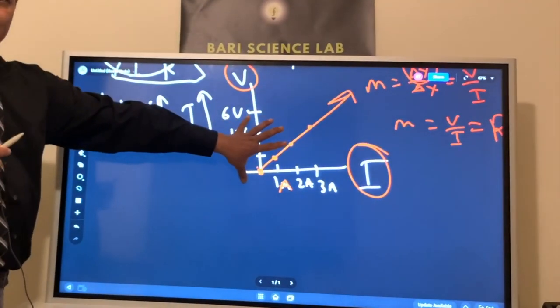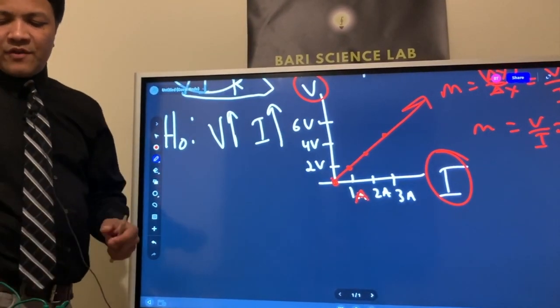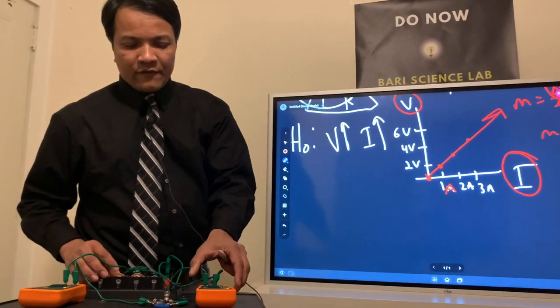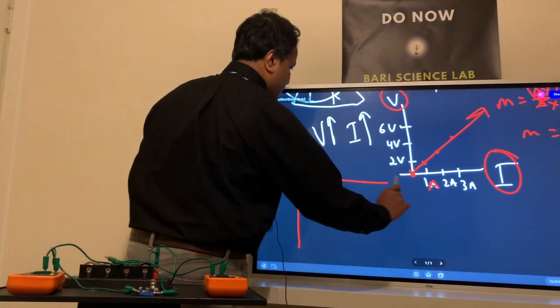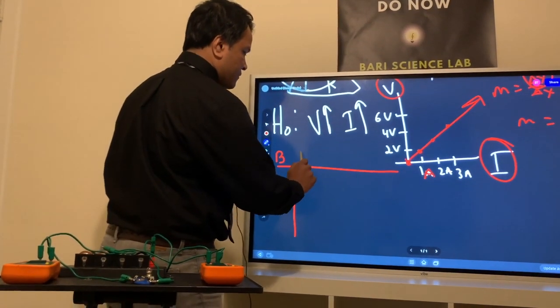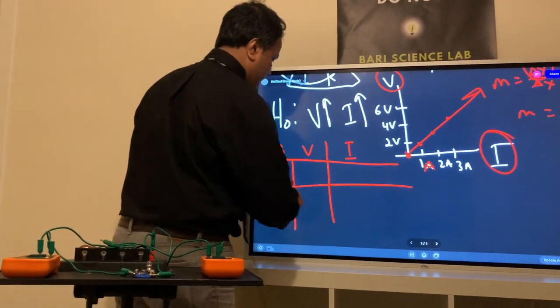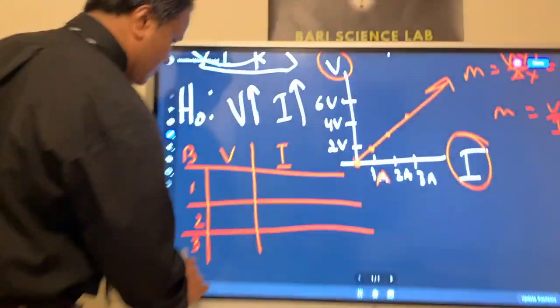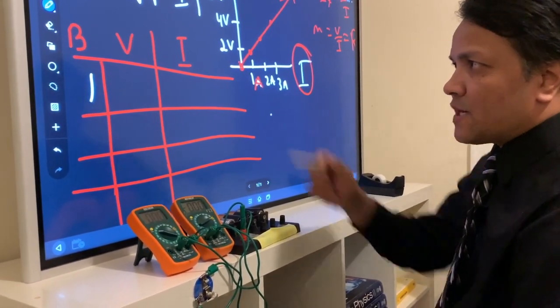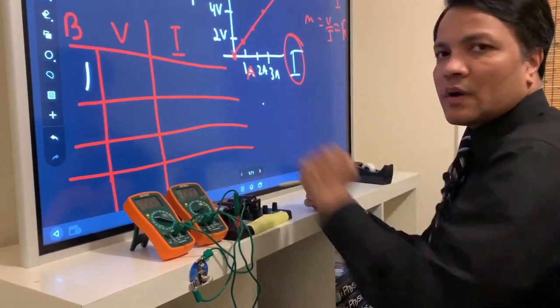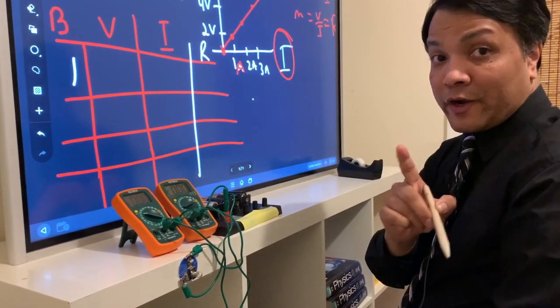So now, we're going to verify whether that is correct by creating the circuit. We have over here the power pack coming from the battery. We have the voltmeter, the ammeter, and the light bulb. So I'm going to have one battery, two battery, three battery, and four battery. What happens if I increase the battery? What happens to the brightness? What happens when I increase the voltage with the current?